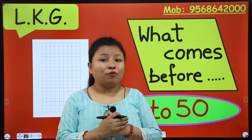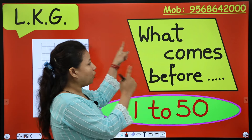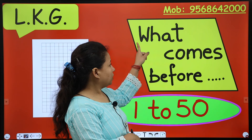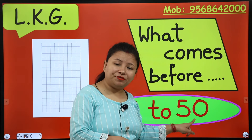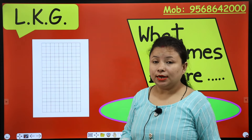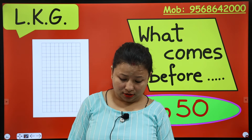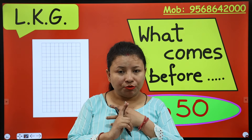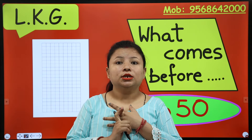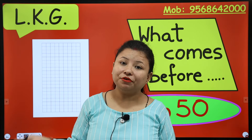So today what we have to do? Today we will do what comes before. What comes before? 1 to 50. In my last class we did what comes before 1 to 20 and 1 to 30. Now today we will do what comes before 1 to 50.